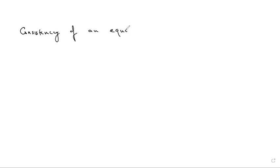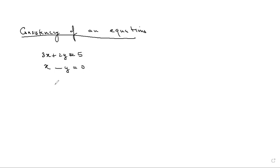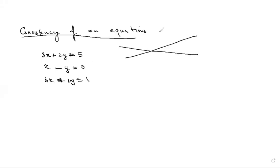A system of equations — by consistency we mean that every linear equation represents a straight line. For example, 3x + 2y = 5, x − y = 0, 3x − 2y = 1 — all of them represent straight lines. If the three lines intersect at a common point, that means the three equations have a common solution. If the equations have a common solution, we say that the equations are consistent.